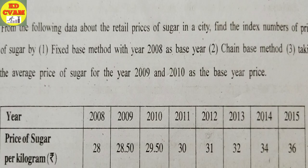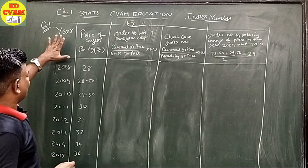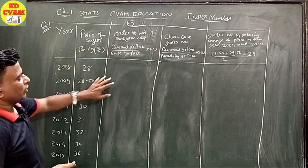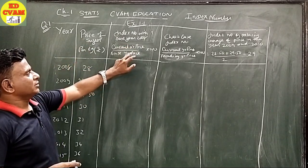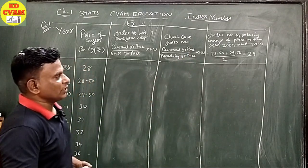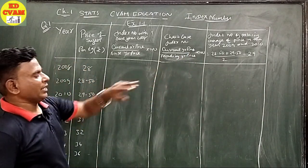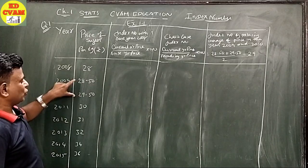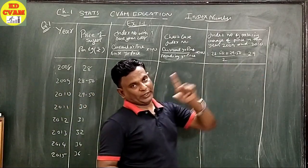Let's go to the next one. From the following data about the retail price of sugar in a city, find the index number of the price of sugar by: fixed base method with the year 2008 as base year; chain base method; and taking the average price of sugar for the year 2009 and 2010 as the base year price. The data of year and price of sugar are given. Average of 28.50 and 29.50 divided by 2 gives 29.